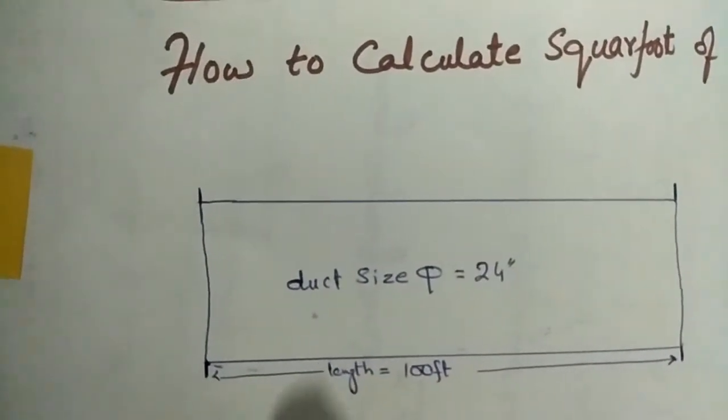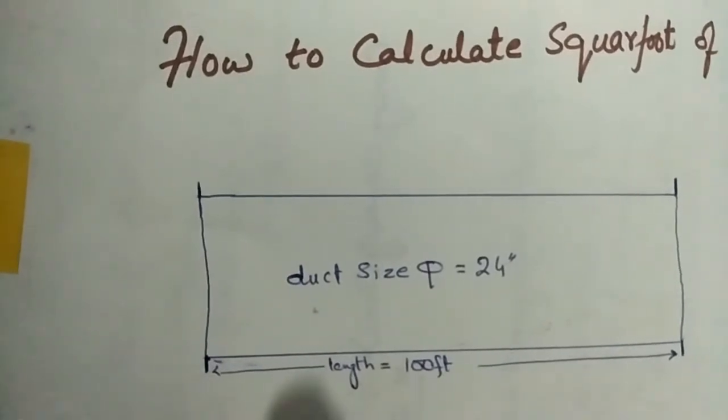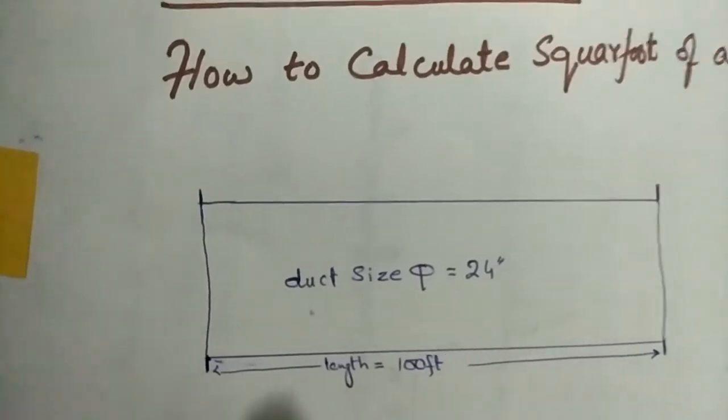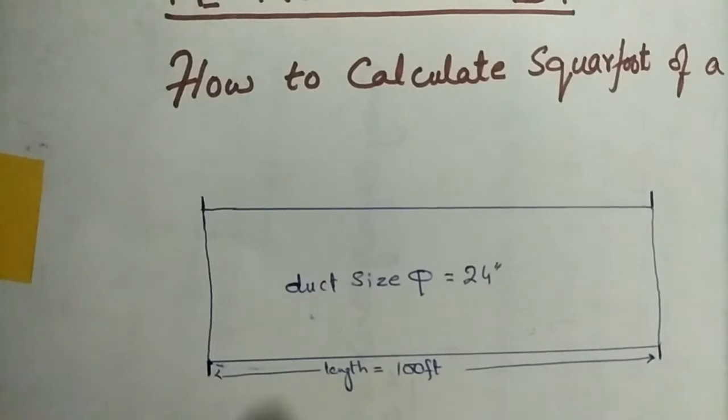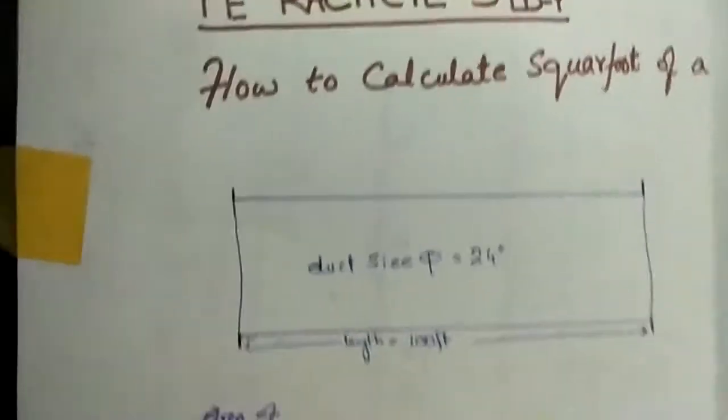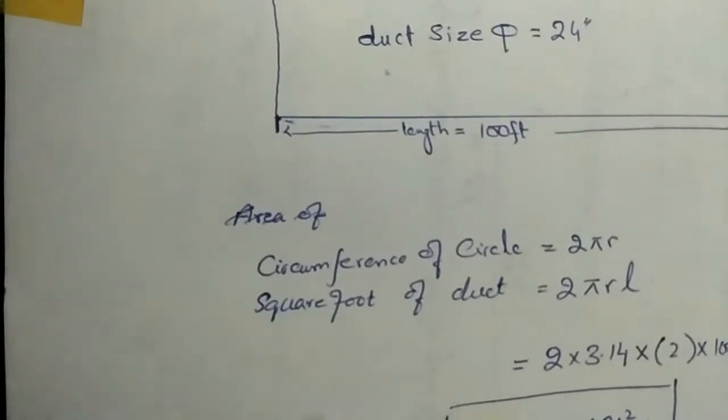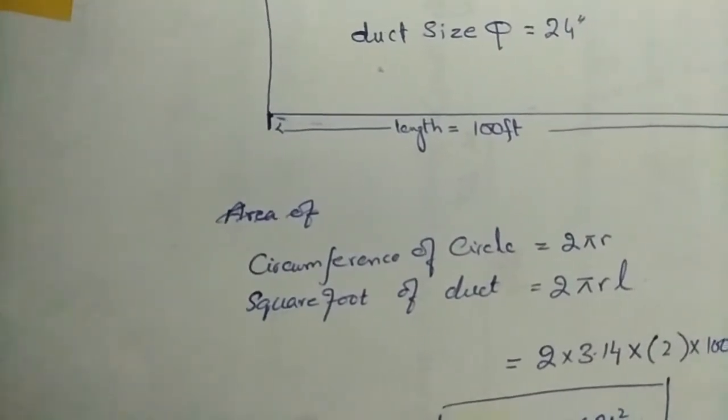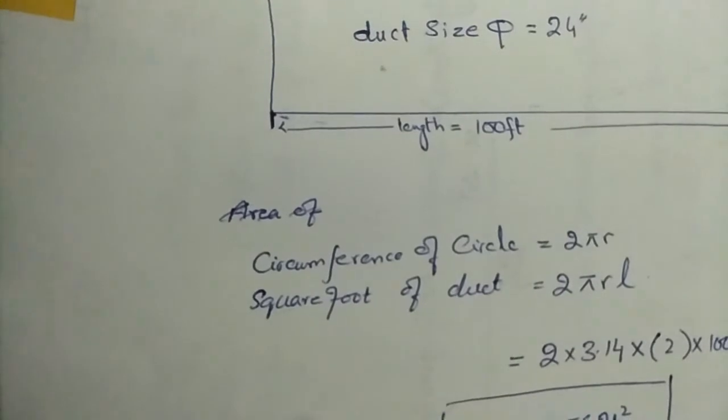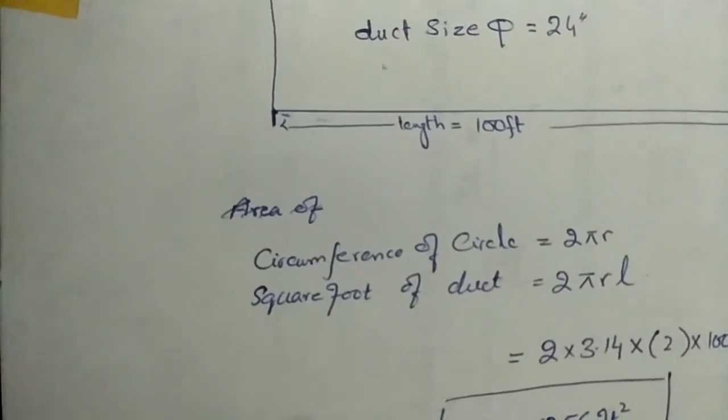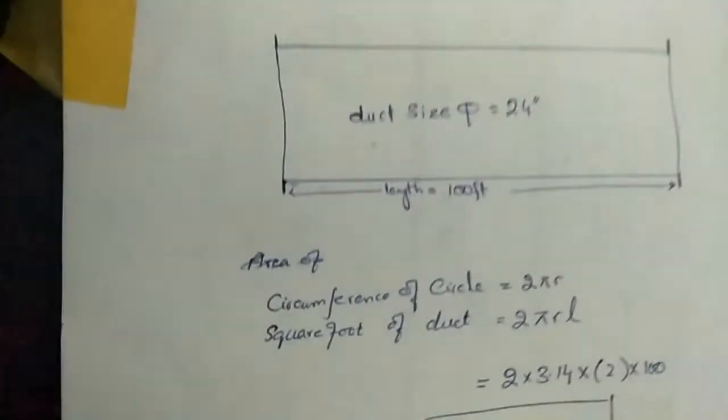Now we need to calculate how many square feet are in this duct. To calculate the square footage of a round duct, first calculate the circumference of the circle, then multiply the length by the circumference to get the square footage. In our case, the duct